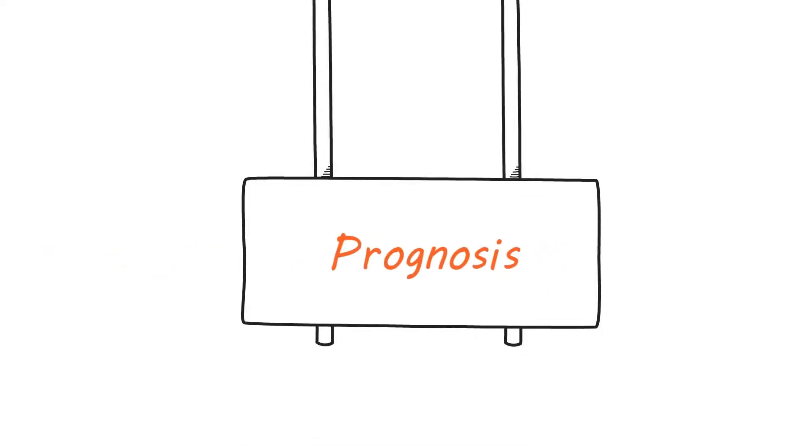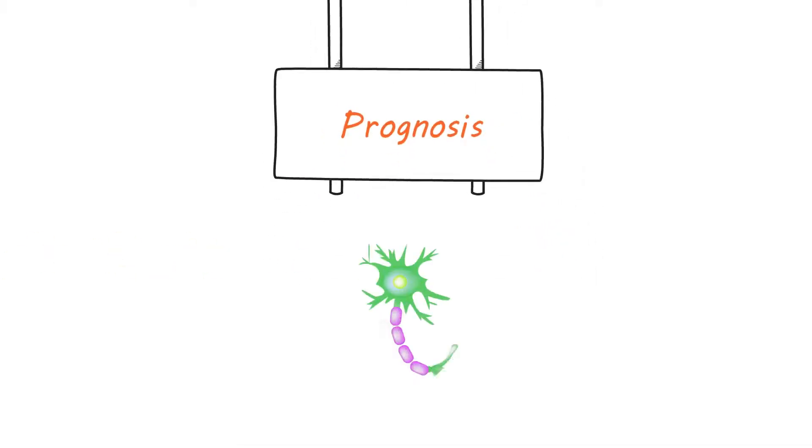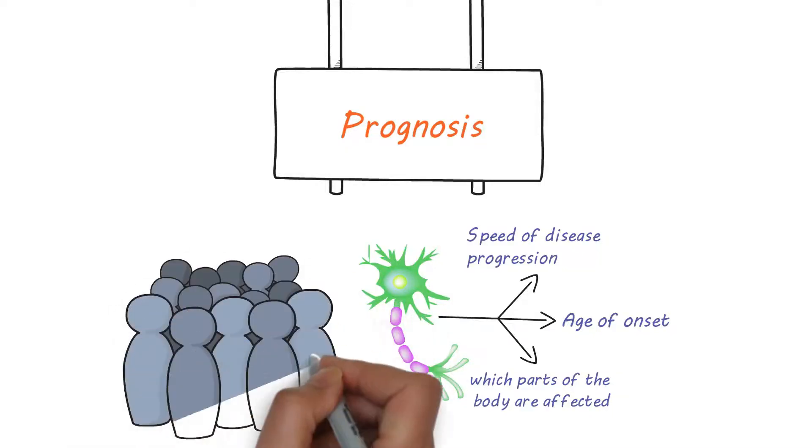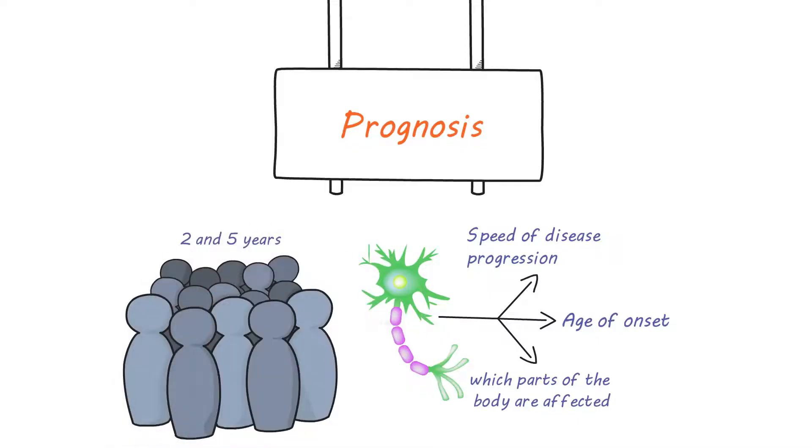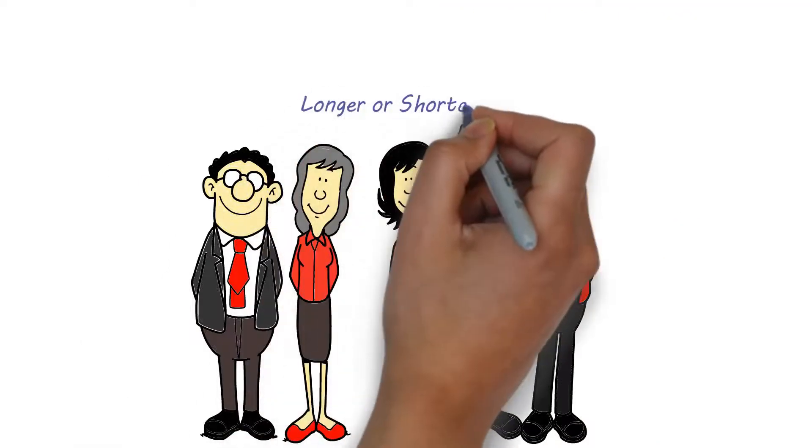Prognosis. The prognosis for MND can vary widely depending on a variety of factors such as age of onset, the speed of disease progression, and which parts of the body are affected. On average, people with MND typically survive between 2 and 5 years from the time of diagnosis, although some individuals may live longer or shorter.